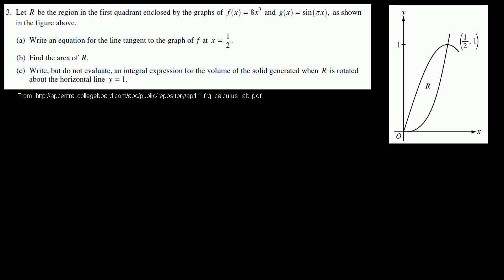Let R be the region in the first quadrant enclosed by the graphs of f of x equals 8x to the third and g of x equals sine of pi x, as shown in the figure above. Part A: write the equation for the line tangent to the graph of f at x equals one half.